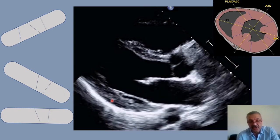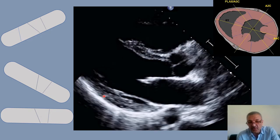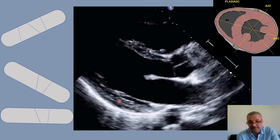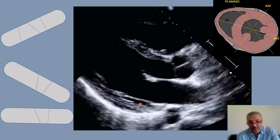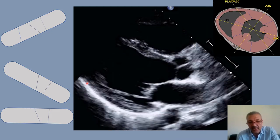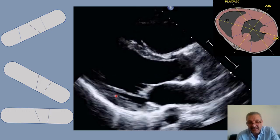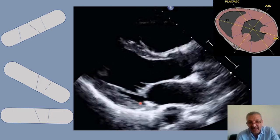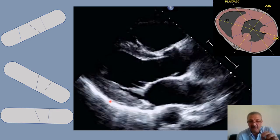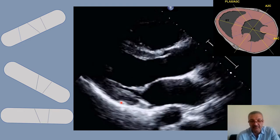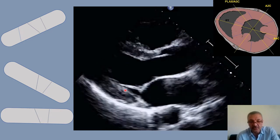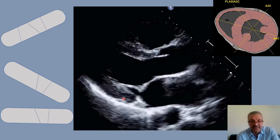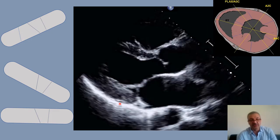At the posterior wall too, if you notice chordae tendineae coming into view, go along the entire posterior wall and notice that the real border is deeper. If you look carefully, you can see a slight hyperechoic line between the chordae tendineae and the real myocardium. Place your marker there and measure for the posterior wall.